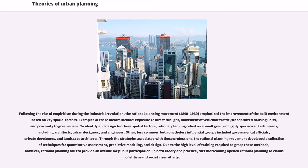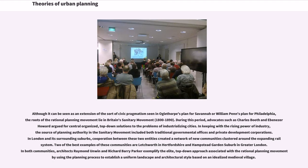In both theory and practice, this shortcoming opened rational planning to claims of elitism and social insensitivity. Although it can be seen as an extension of civic pragmatism seen in Oglethorpe's plan for Savannah or William Penn's plan for Philadelphia, the roots of the rational planning movement lie in Britain's sanitary movement. During this period, advocates such as Charles Booth and Ebenezer Howard argued for centrally organized, top-down solutions to the problems of industrializing cities. The source of planning authority included both traditional governmental offices and private development corporations.